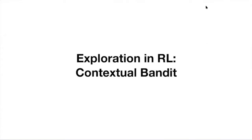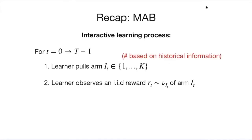We're going to continue talking about Bandit, but this time a slightly more complicated and more practical version called Contextual Bandit. Let's do a quick recap on the classic multi-armed bandit setting. This is an interactive learning process where every day the learning system pulls an arm or action from K many actions. The learning algorithm strategy can be adaptive, updated every day based on historical information.